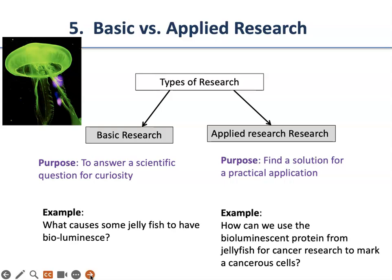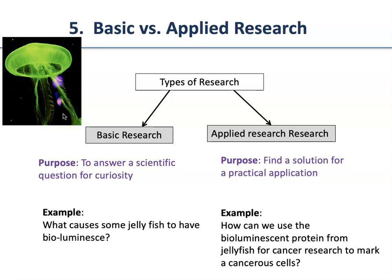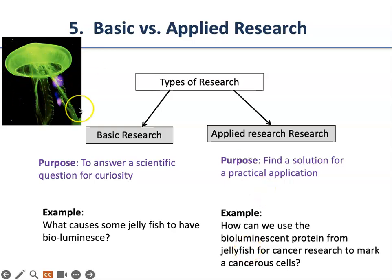Topic five: basic versus applied research. Research can be divided into two types based on purpose. Applied research is to find a solution for a practical application. For example, somebody discovered a bioluminescent glowing-in-the-dark green jellyfish, and they identified the protein that causes this green fluorescence. The person who identified the green fluorescent protein was a basic research scientist — he was just curious why this phenomenon was happening, not trying to use it to help humanity. When you do research just for the curiosity of finding how something works, that is called basic research.